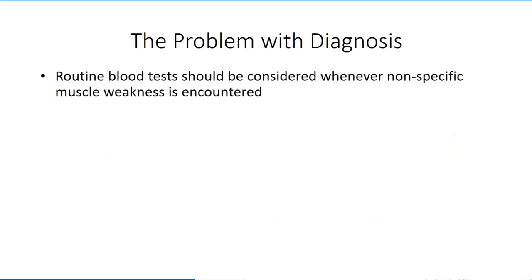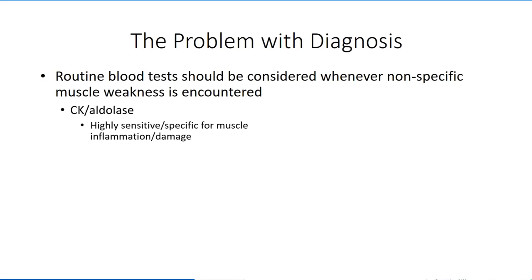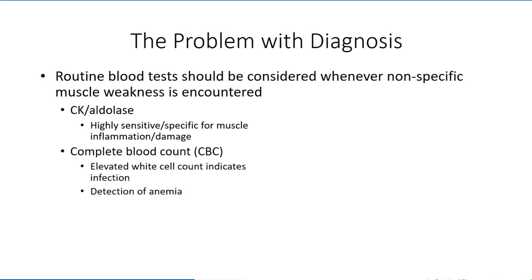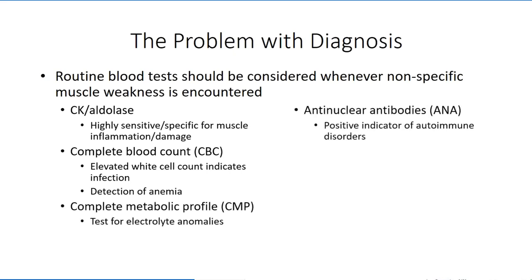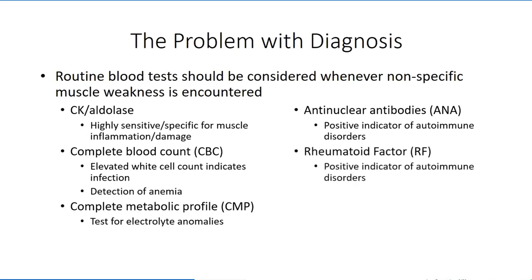While ordering a barrage of complex and expensive tests in the hunt for a zebra may not be a realistic solution, there are a number of tests that can be performed on routine blood work that should be considered with cases of nonspecific muscle weakness. Elevations of creatine kinase, as well as aldolase, are an indication of muscle disease and include many, but not all, of the inflammatory myopathies. A CBC may identify inflammatory markers, which may also indicate the presence of an inflammatory myopathy. The inflammatory myopathies can be associated with autoimmune disorders, and detection of antinuclear antibodies or rheumatoid factor may allow physicians to hone in on the inflammatory myopathies.